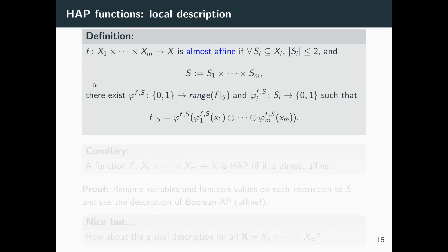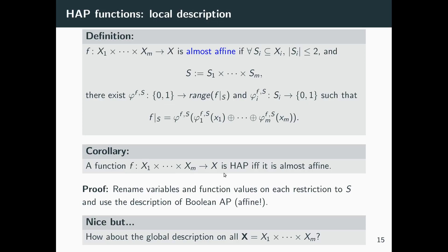Concerning local descriptions of hard AP functions, we need the notion of 'almost defined': a function is almost defined if for any restriction to a Cartesian product of sets with at most two elements, a decomposition of a specific displayed form can be found. We showed that a function is hard AP if and only if it is almost defined. The proof uses the boolean result, together with renaming of variables and function values.